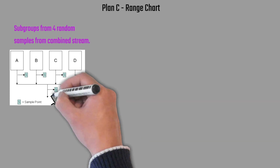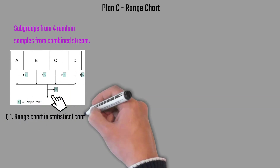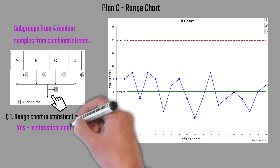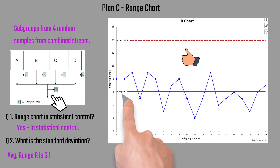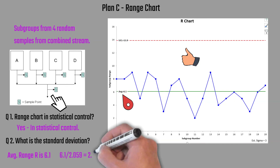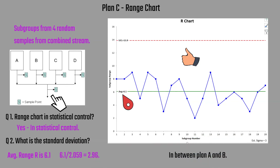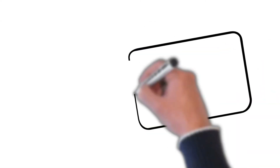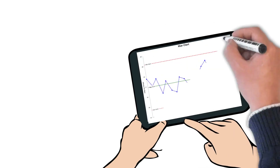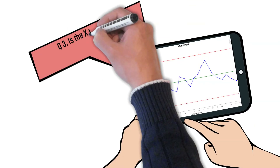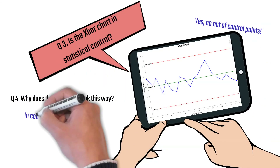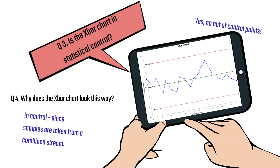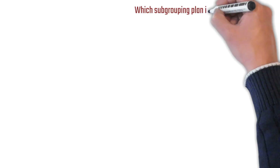Now we move to Plan C. Remember, these subgroups are four random samples from the combined stream. Is the range chart in statistical control? Yes — everything is within the control limits and no patterns. The average range here is 6.1, giving a standard deviation of 2.96, which is in between Plan A and Plan B. The X-bar chart for Plan C is in statistical control — no points beyond the control limits, no patterns. Why does it look this way? Because the samples are taken from the combined stream, which happens to be in control.